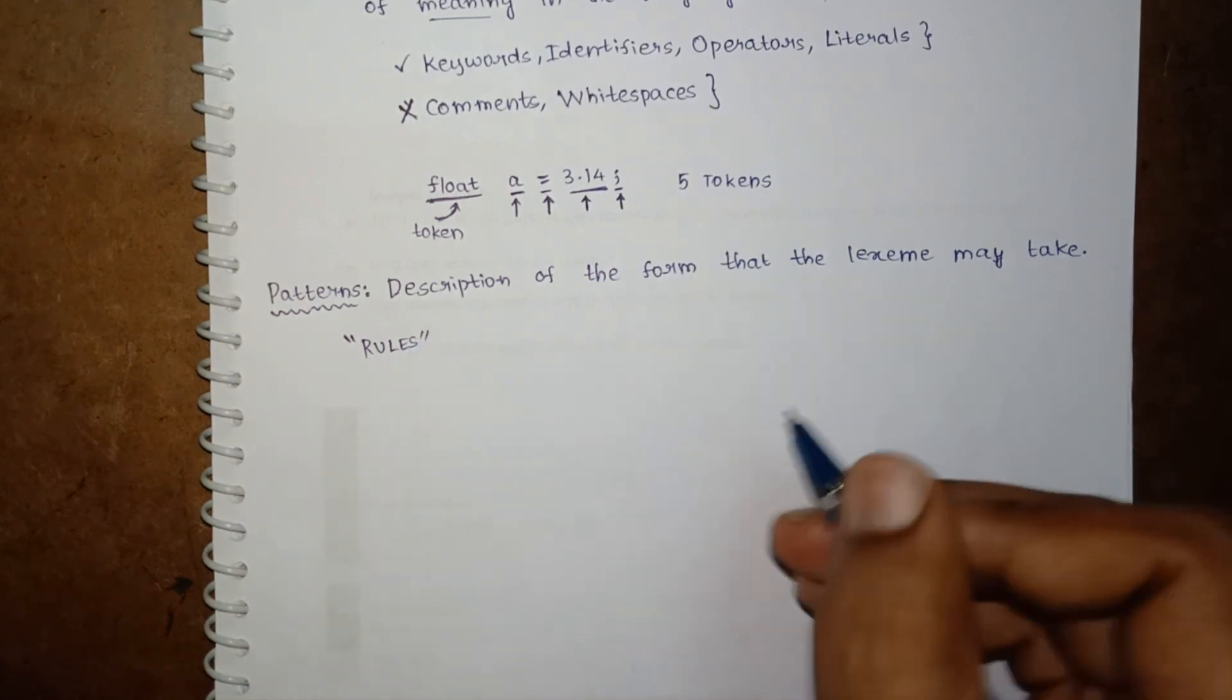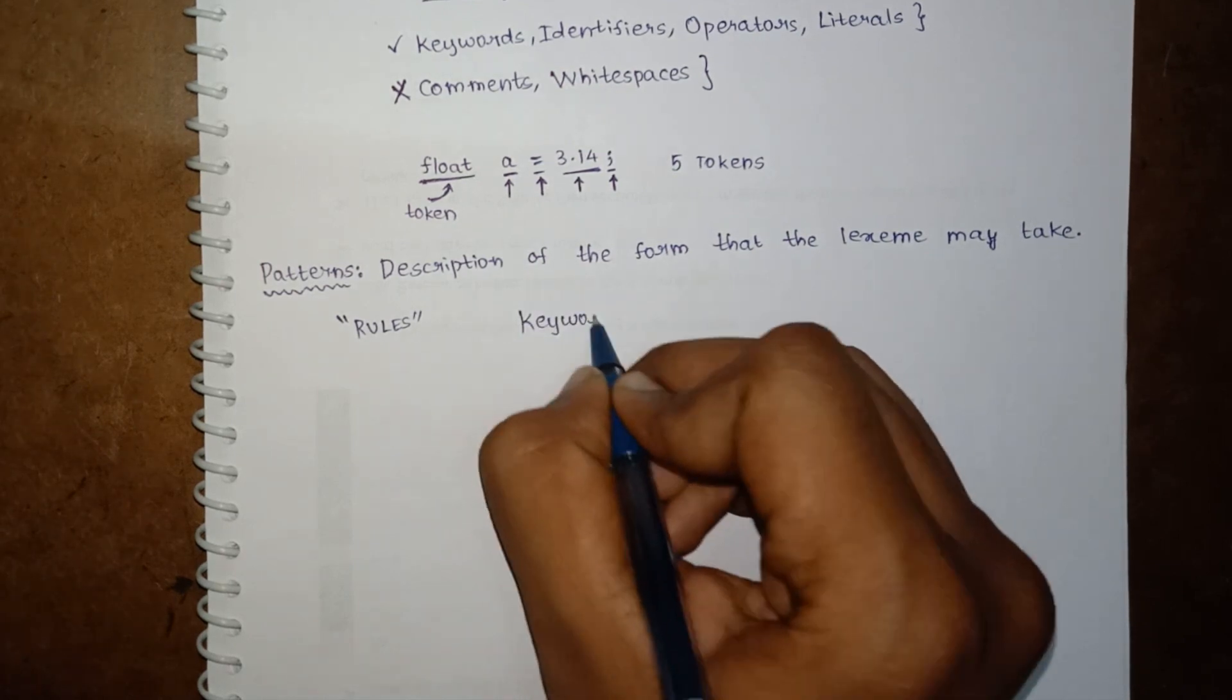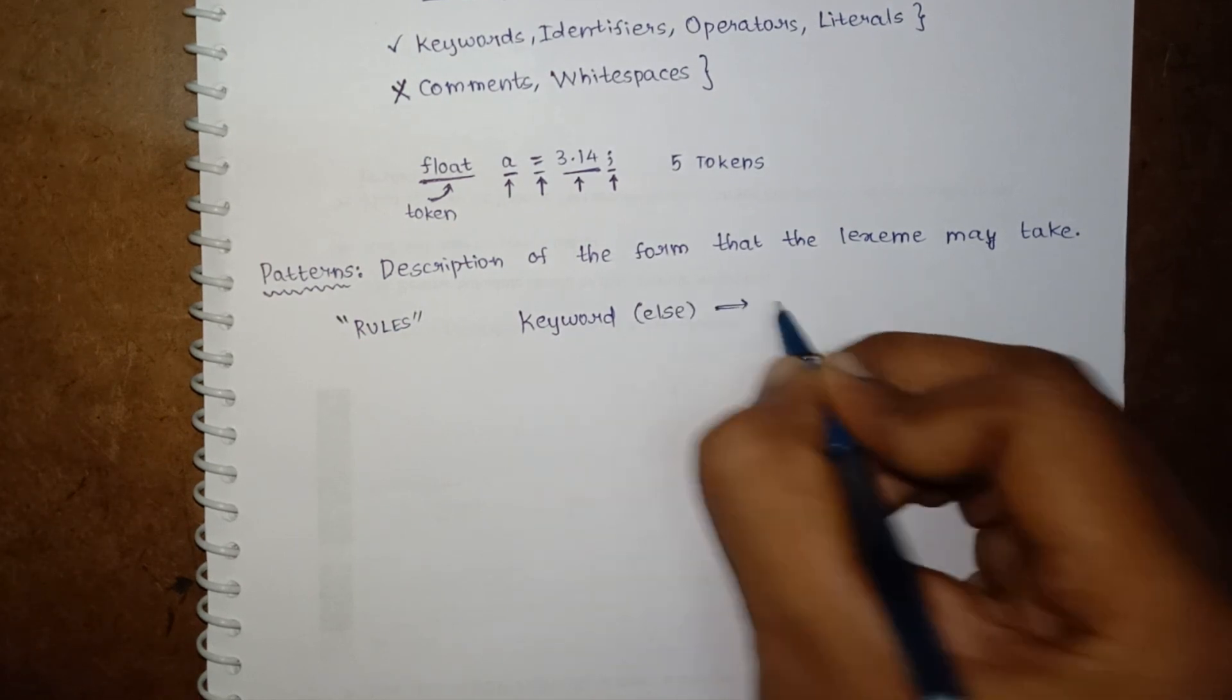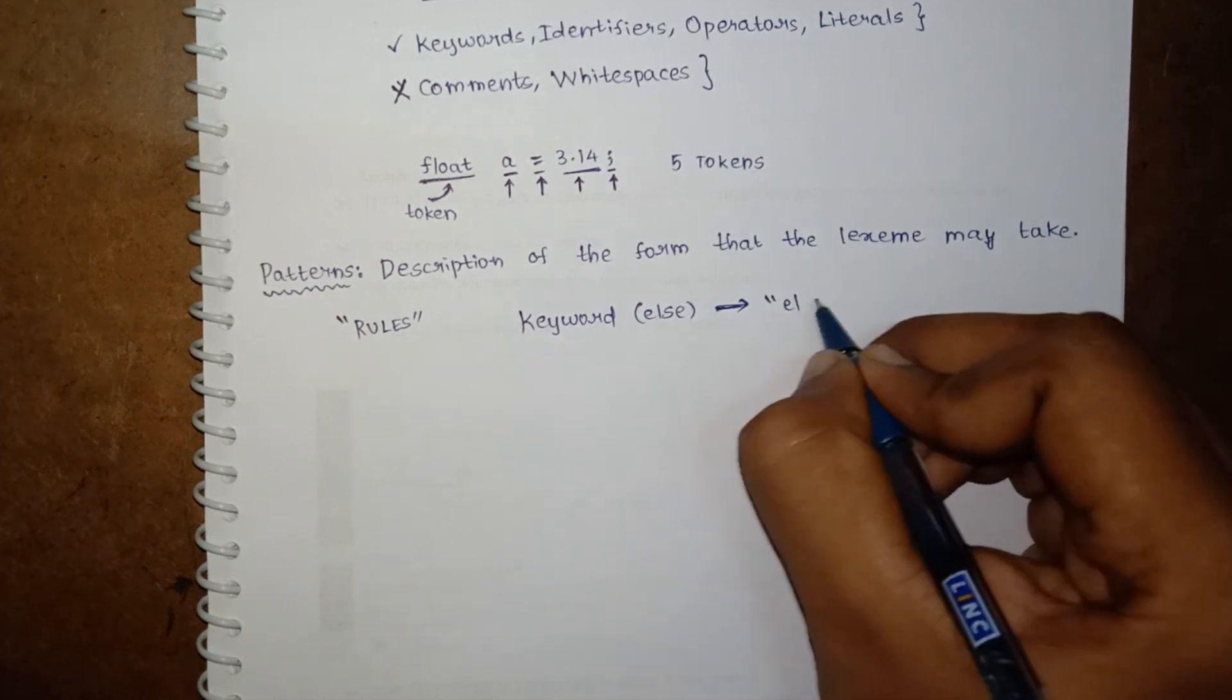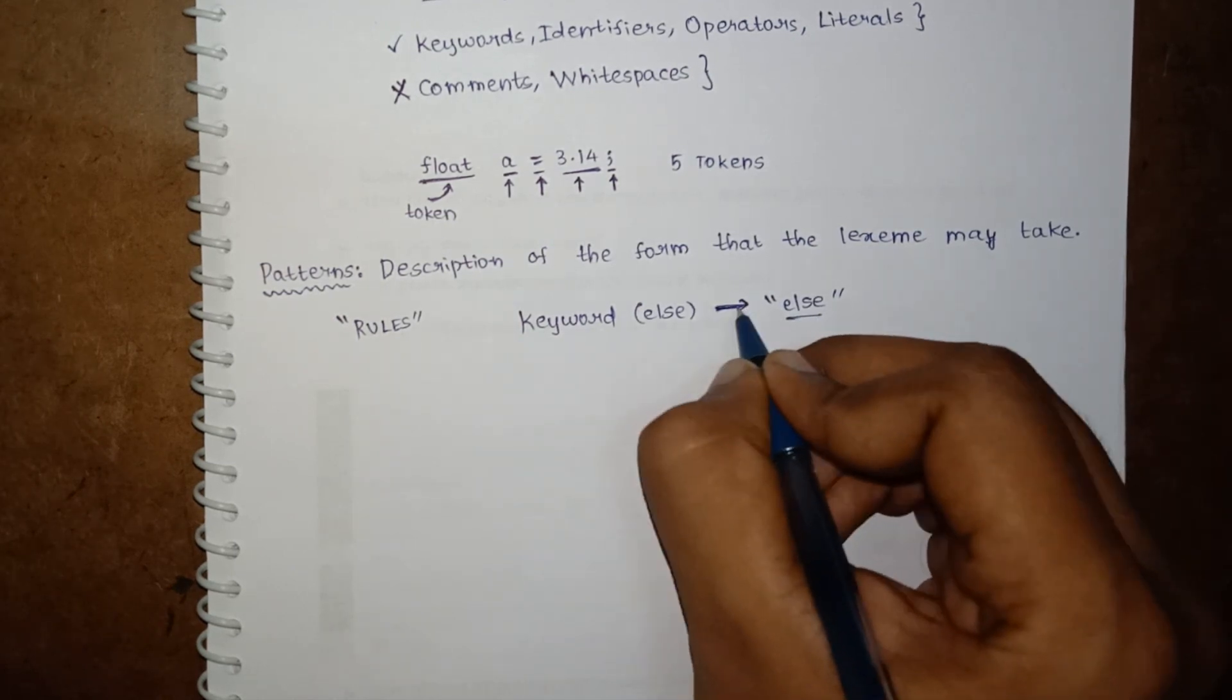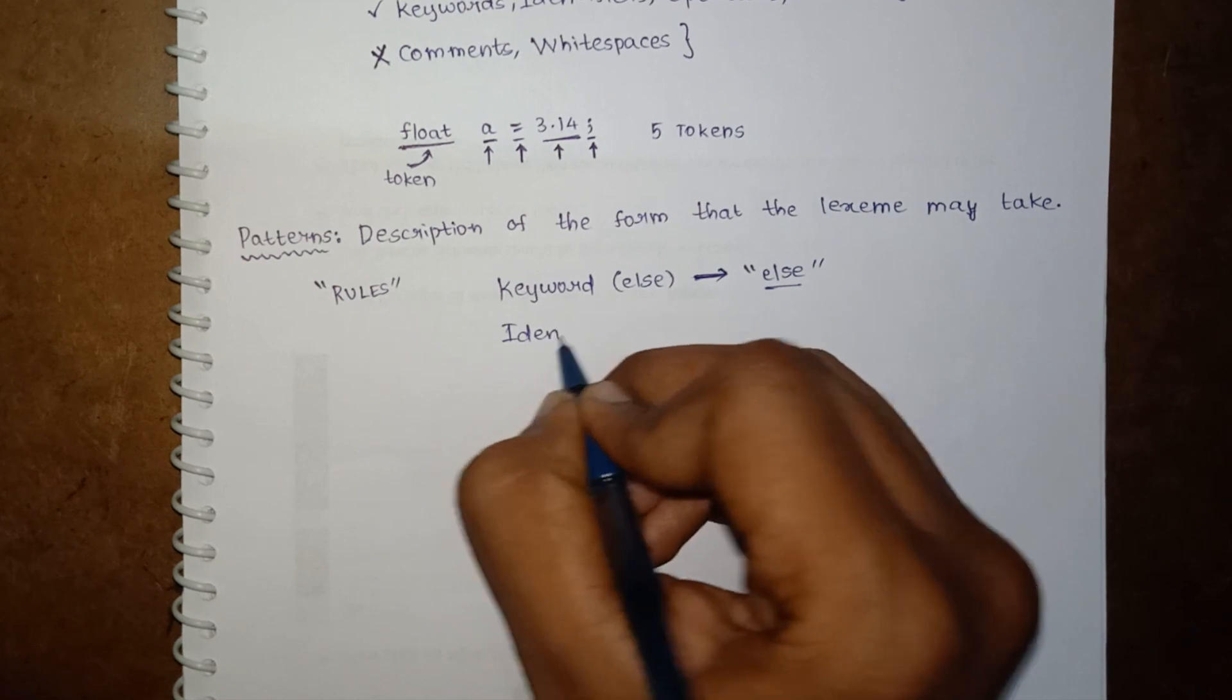To be followed by any lexeme to be considered as a lexeme. For example, take any keyword, let us take a keyword 'else'. Now for this to be considered as a lexeme, it is simply a group of characters, sequence of characters e-l-s-e. It should be in this manner to be considered as a keyword, which is a lexeme to consider.